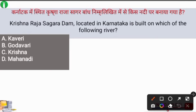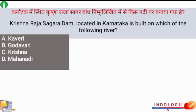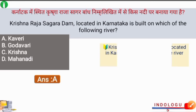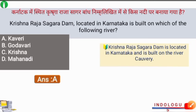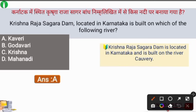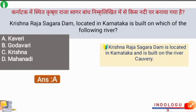Next question: The Krishna Raja Sagar Dam, located in Karnataka, is built on which river? The right answer is option A. The Krishna Raja Sagar Dam is located in Karnataka and is built on the Kaveri River.